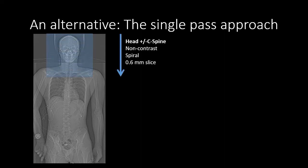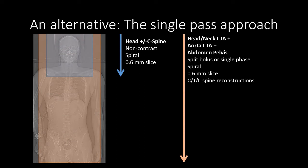Some institutions are now trying to move toward a single-pass approach to reduce the radiation exposure that multiple CTs require. In this single-pass approach, we will still get a non-contrast examination of the head and cervical spine, but then we will get a CTA of the head and neck, aorta, and abdomen and pelvis in a single pass. Again, this reduces the amount of radiation the patient is exposed to, but it doesn't give you that temporal information that you get by having an arterial phase, a portal venous phase, and a delayed phase.